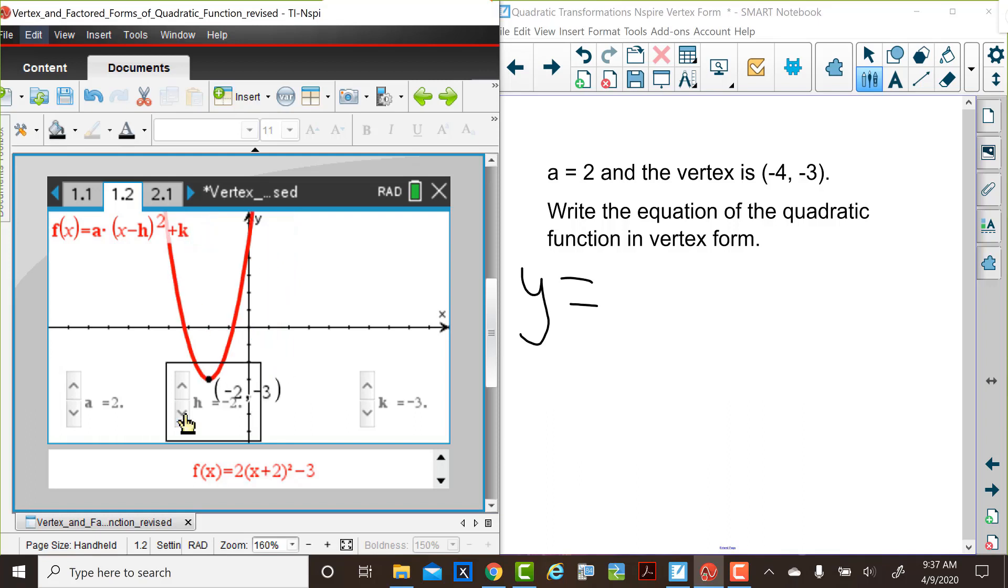Just as she started out there, y equals. And then we'll change the h value to negative 4. We have a horizontal translation, 4 units to the left. And then the k value is changed to negative 3. So the equation is shown at the bottom,